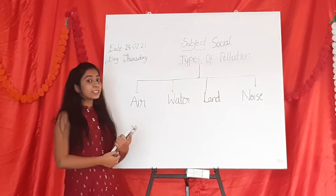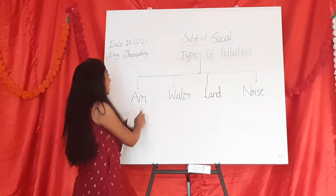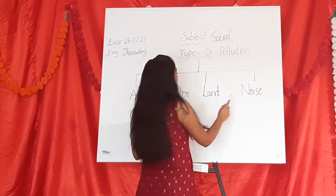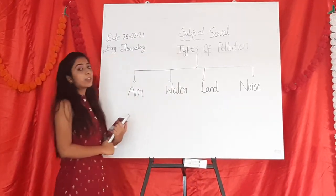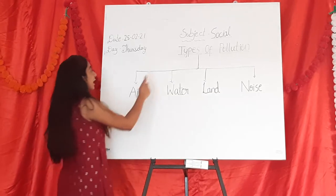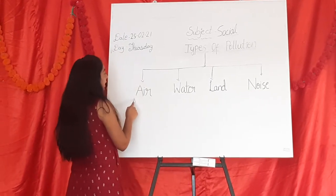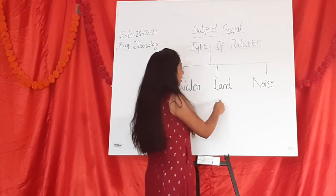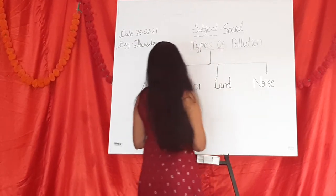Pollution means contamination of air, water, land, and noise, which is known as pollution. Under types of pollution, there are air, water, land, and noise pollution.